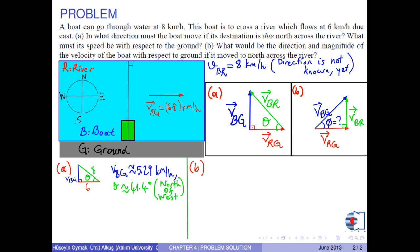According to the configuration in Part B, we have a right triangle. Then, the speed of the boat with respect to the ground is found by 10 km per hour.